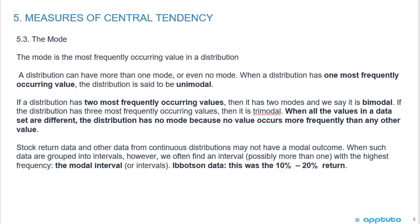Stock return data and other data from continuous distributions may not have a modal outcome. When such data are grouped into intervals, however, we often find an interval with the highest frequency, the modal interval. I already showed that modal interval on the histogram. In the Ibbotson data, that was the 10% to 20% S&P 500 return, the most frequent annual returns from 1926 on.